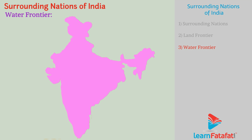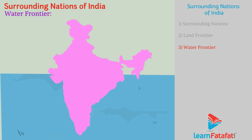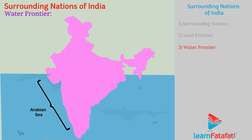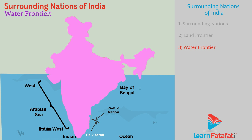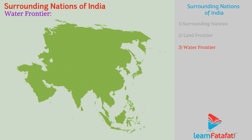Water Frontier. India is surrounded by the Arabian Sea in the west and south-west, the Bay of Bengal in the east and south-east, and the Indian Ocean in the south. Gulf of Mannar and Palk Strait separate India and Sri Lanka. India shares sea boundaries with Pakistan, Sri Lanka, Maldives, Indonesia, Bangladesh, and Myanmar.